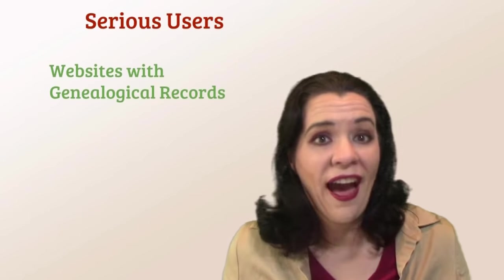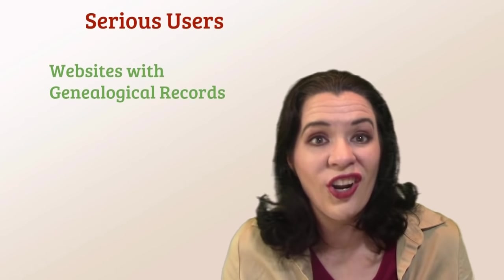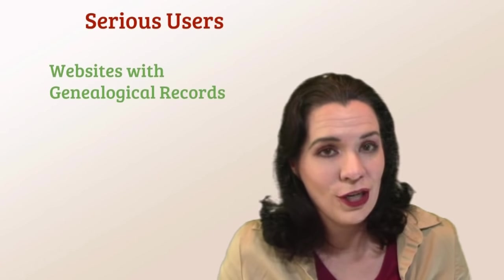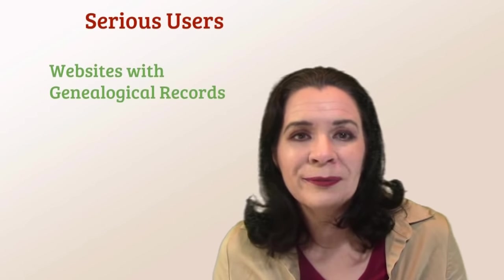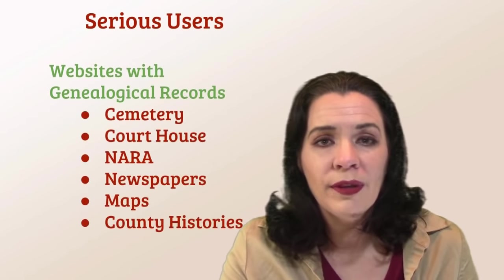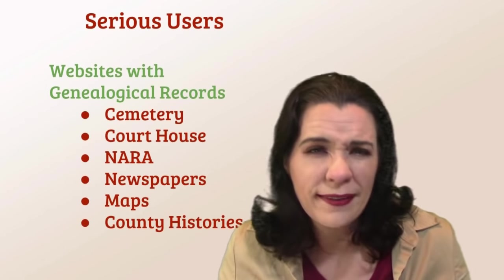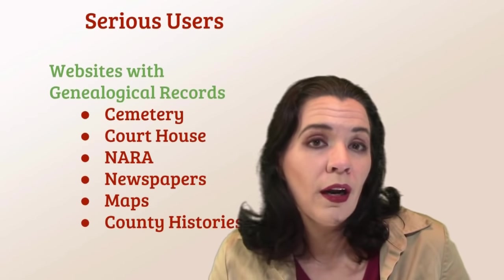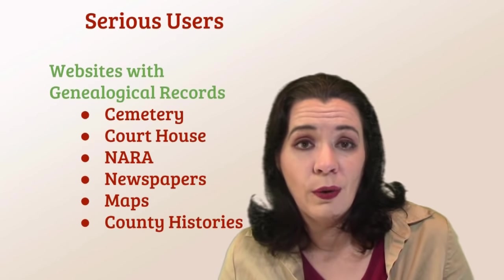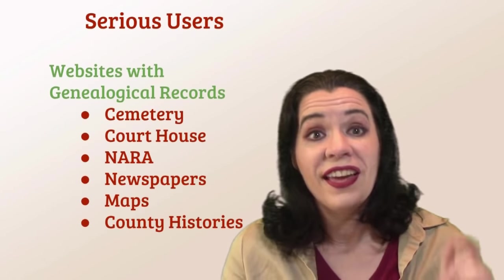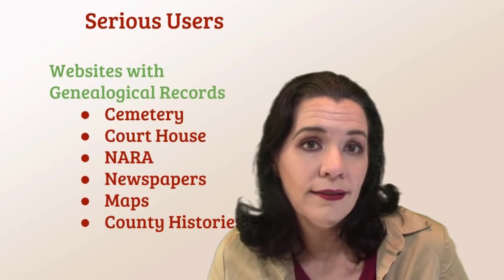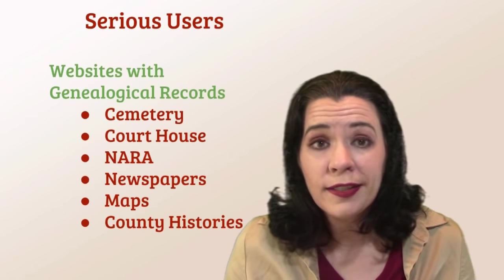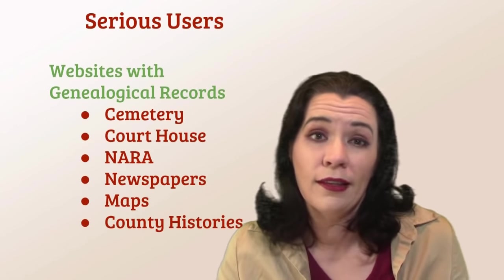Serious researchers have a lot of places they can go once they've attempted to exhaust the big four — Ancestry, FindMyPast, MyHeritage, FamilySearch. They go off-site, like off-roading. They've probably investigated online record repositories — cemeteries are usually linked with Ancestry and FamilySearch to FindAGrave and BillionGraves. But we go deeper. For example, if I know my ancestors were buried in Spring Grove Cemetery in Cincinnati Ohio, I head to the Spring Grove Cemetery website and find great information there.